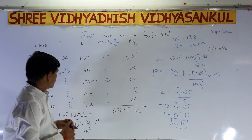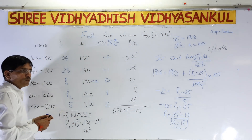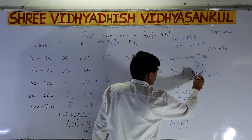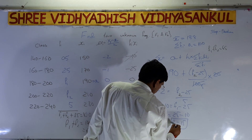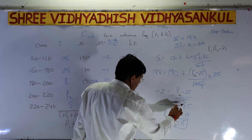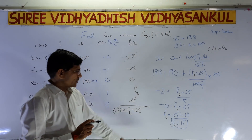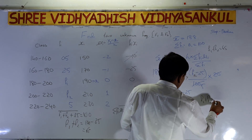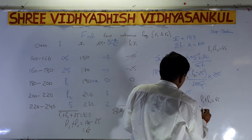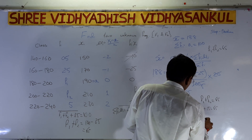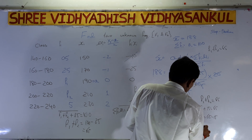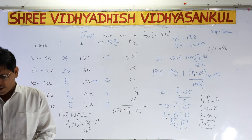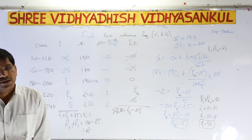Checking which variable we solved for — confirming it is f2 = 15. Now using f1 + f2 = 65: f1 + 15 = 65, so f1 = 50. We have both values: f1 = 50 and f2 = 15. Their total is 65, which confirms the answer is correct.